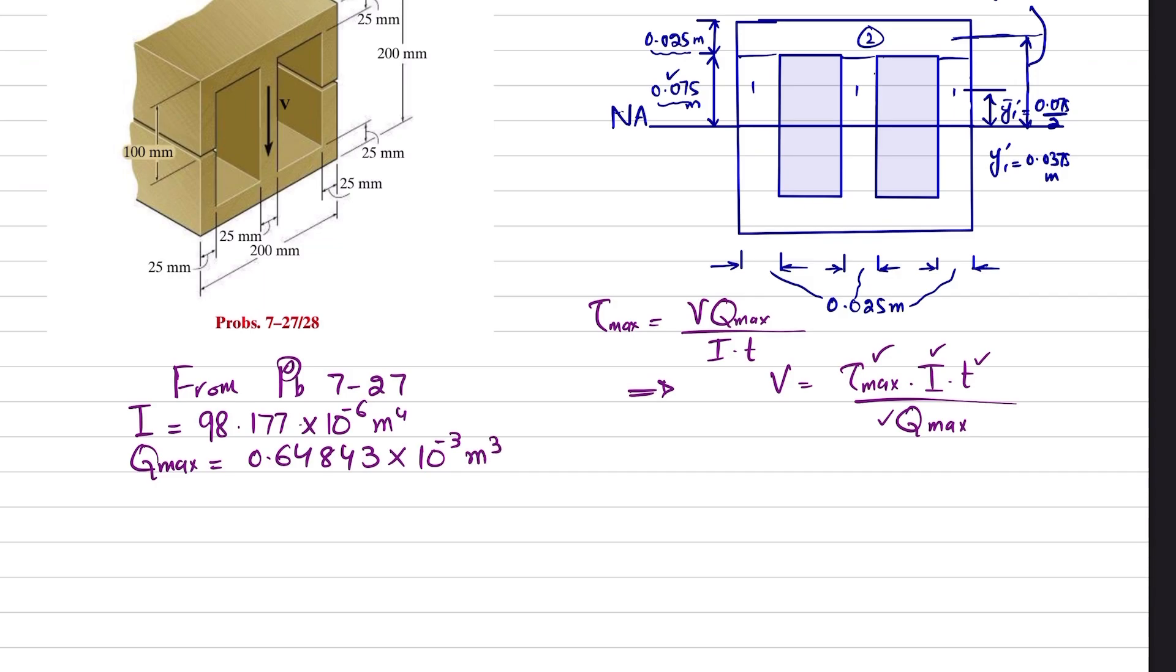Now we will find V before cut—what will be V_max? That is our first part. You can see you have I, you have Q_max, you have tau_max as well. Tau_max is given in the question, that is 75 megapascals, so 75 × 10^6 pascals.